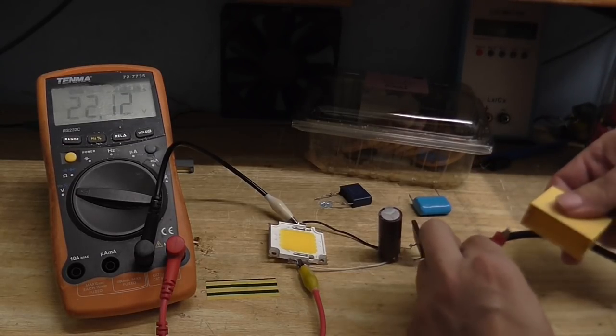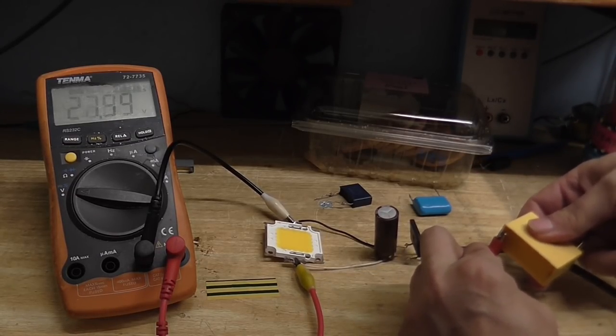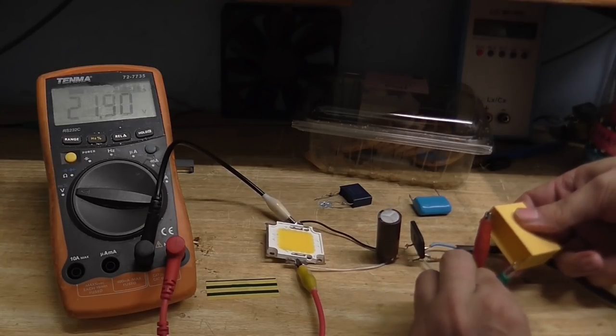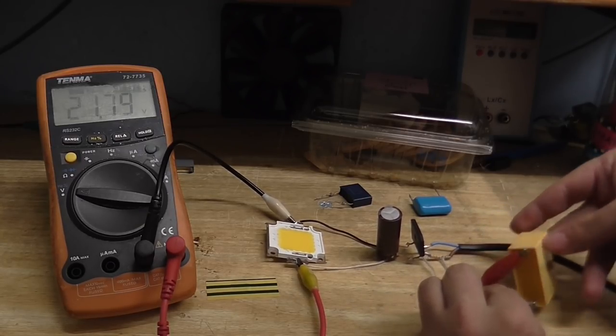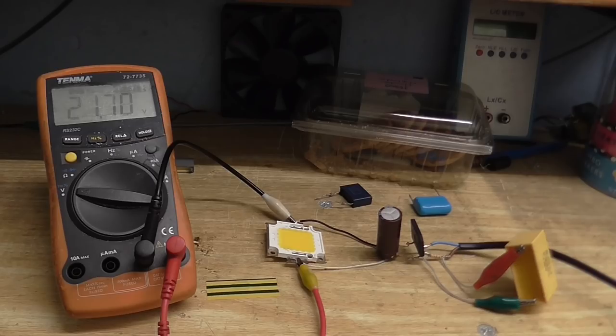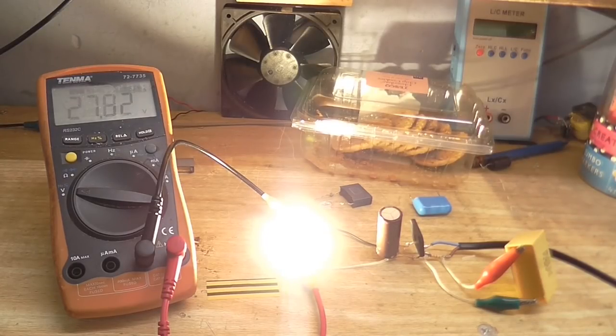I'll have to have a look to see what's going across that later. OK, so here is 2.2 microfarad. Should be much brighter. Oh, yes. Look at that. 27 volts. That's actually casting shadows up onto the ceiling where the lights are.